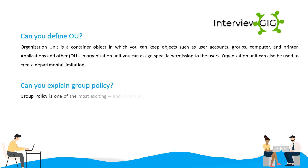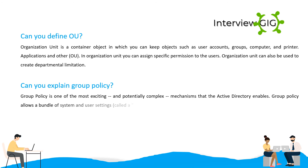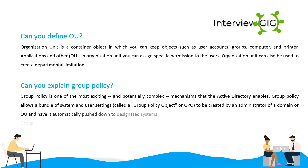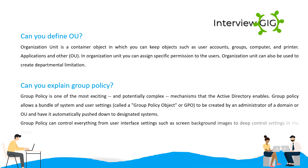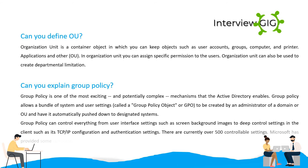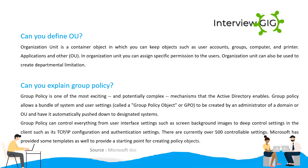Can you explain Group Policy? Group Policy is one of the most powerful, and potentially complex, mechanisms that Active Directory enables. Group Policy allows a bundle of system and user settings, called a Group Policy Object or GPO, to be created by an administrator of a domain or OU and have it automatically pushed down to designated systems. Group Policy can control everything from user interface settings such as screen background images to deep control settings in the client such as its TCP/IP configuration and authentication settings. There are currently over 500 controllable settings. Microsoft has provided some templates as well to provide a starting point for creating policy objects.